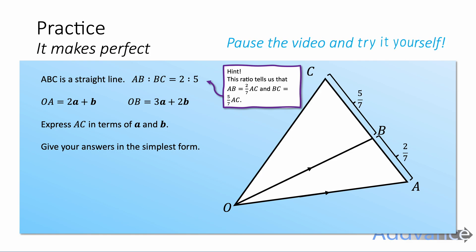There's a practice question for you to try here, if you're ready. It says ABC is a straight line. AB to BC is a ratio of 2 to 5. And so that tells us that the line AB is 2 sevenths of the full distance, and BC is 5 sevenths of the full distance from A to C. OA is 2a plus b. OB is 3a plus 2b. Express AC in terms of a and b. Give your answers in the simplest form. You can pause this video and try this yourself in your own time.